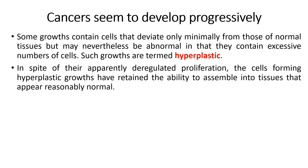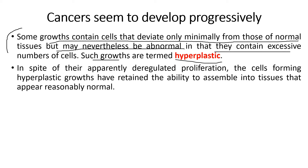Starting with the first form, hyperplasia. In this, some growths contain cells that deviate only minimally from those of normal tissues, but they are not normal in that they contain an excessive number of cells. Such growths are hyperplastic. Hyperplastic cells are very difficult to differentiate from normal cells as they possess properties of normal cells, but there are differentiating factors due to which we call them cancer cells.